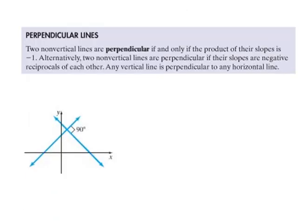Now, in contrast to that, we have perpendicular lines. And this is an example of a perpendicular line. It says two non-vertical lines are perpendicular if and only if the product of their slopes is negative 1. Alright, that makes a whole lot of sense, right?